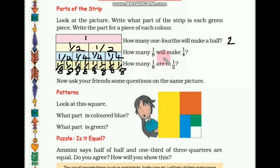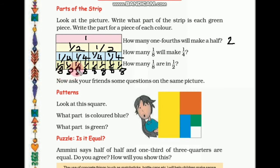Now how many 1 eighths will make 1 fourth? Let's see here — 1 fourth is there and here. So how many 1 eighths will make 1 fourth? So 1, 2 — 2 one-eighths will make 1 fourth.